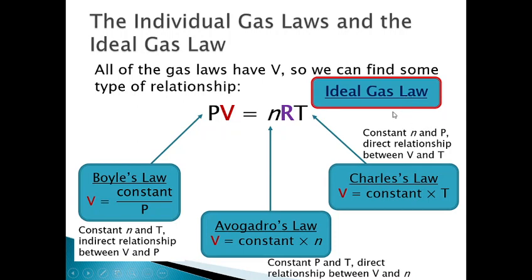The Ideal Gas Law shows you a perfectly linear relationship between pressure, volume, temperature, and the amount in moles. The Ideal Gas Law was developed by three different experiments done by three different people in three different locations — they all happened to be examining the same idea from different points of view. The relationship between P, V, n, and T all goes back to this constant R, called the Ideal Gas Constant.